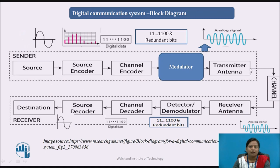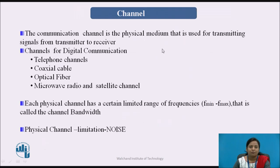Between the transmitter and receiver there is a communication channel. The modulated signal is transmitted over a transmitting antenna toward the receiver. The communication channel is the physical medium used for transmitting signals from transmitter to receiver. Channels for digital communications include wired telephone channels, coaxial cable, and optical fiber, as well as wireless channels such as microwave radio or satellite channels. Each physical channel has a limited range of frequencies called the channel bandwidth. An important limitation of the physical channel is noise.